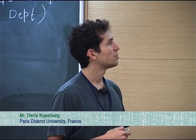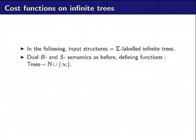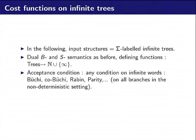Now we will be interested in sigma-labeled infinite trees as input structure, which is a particular case of cost function. As before, we can define the dual B and S semantics, but now they define the cost function from trees to N union infinity. We can put any acceptance conditions that we want on infinite trees—it could be Büchi, co-Büchi, or anything that works on infinite words. The problem is we do not know if this is decidable for such cost functions, so we have to look at subclasses.